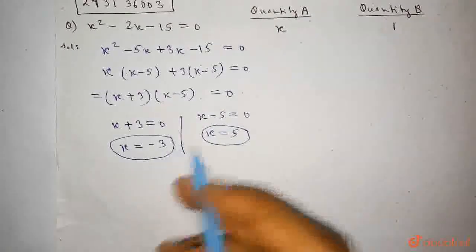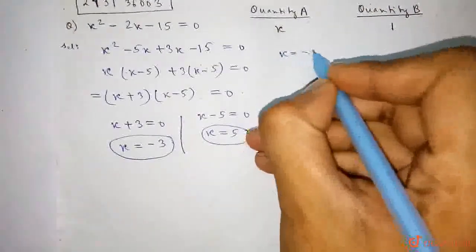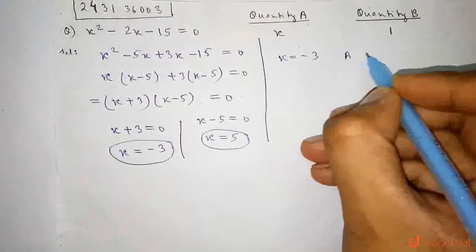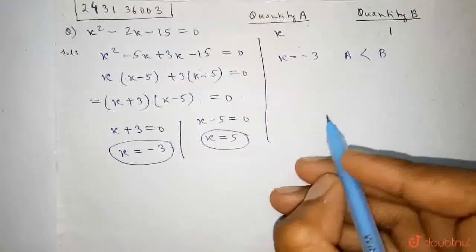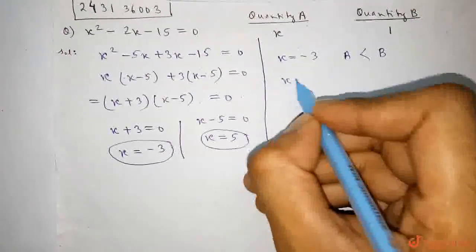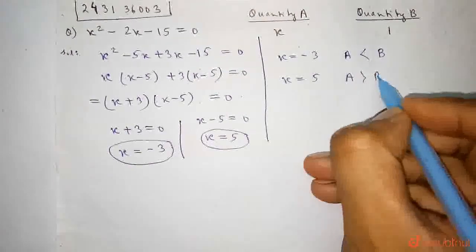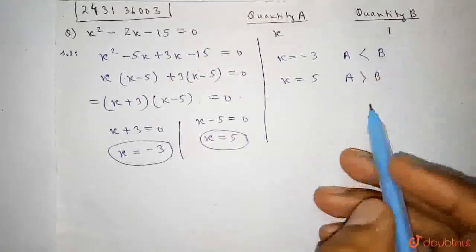If x equals minus 3, then we can say that quantity A is less than quantity B. And if x equals plus 5, then we can say that A is greater than B, as B equals 1 given.